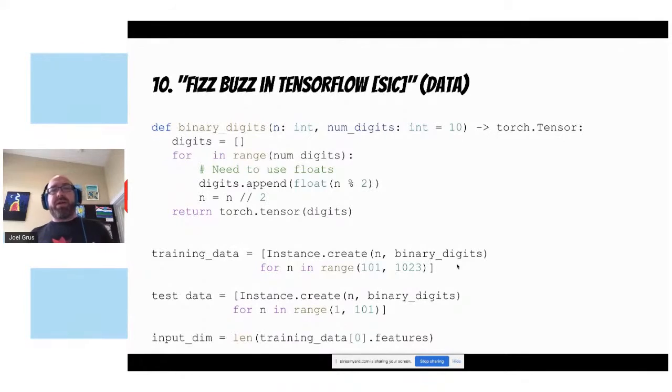In terms of constructing the data, I talk about a couple different ways that you might want to get features out of these numbers for modeling. The one that I found that works best is actually to use the binary digits. So I can represent all numbers up to 1024 with 10 binary digits. So that's what I do. And then, so that I'm doing good machine learning discipline, I train my model on the binary digits for 101 up to 1024. And I test the model on 1 to 100, which is the one I want to predict. So that's how I set up the data.